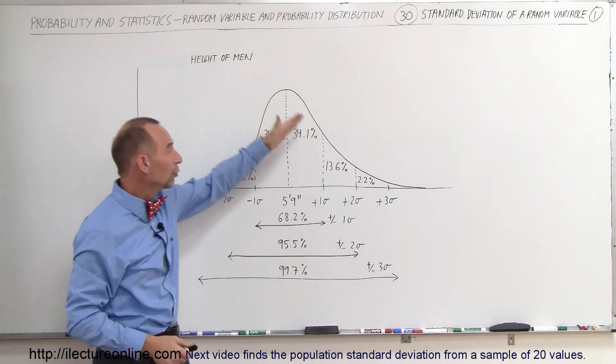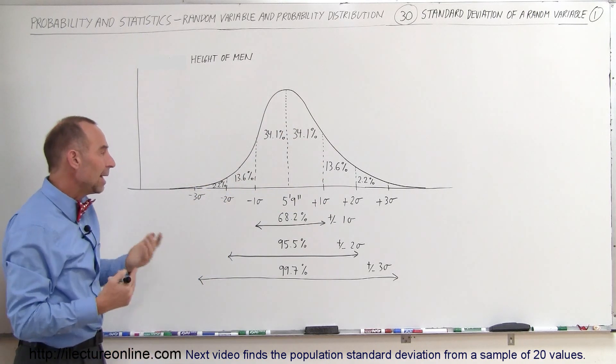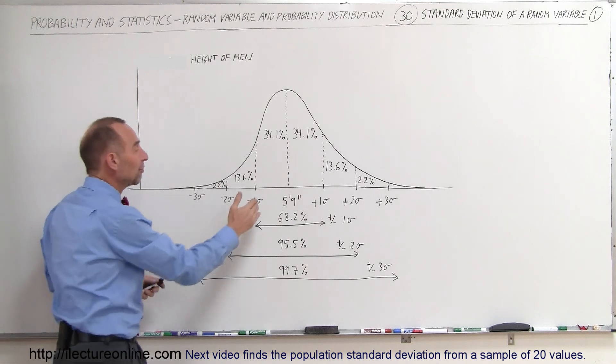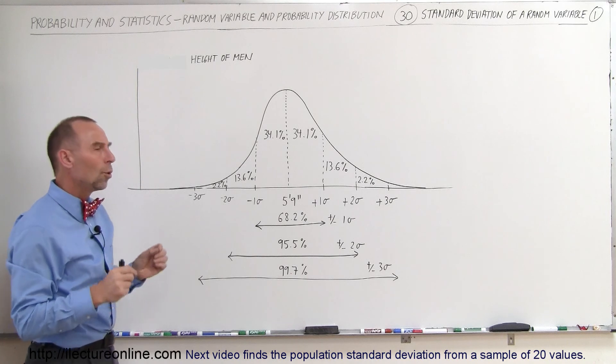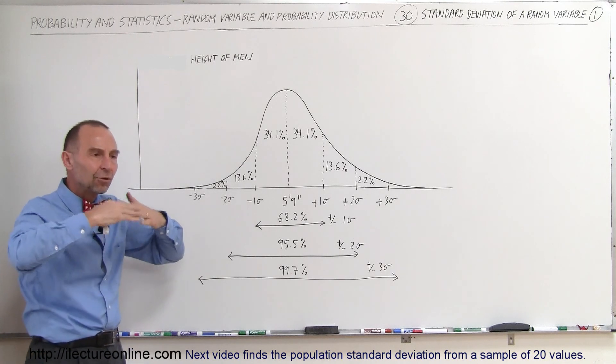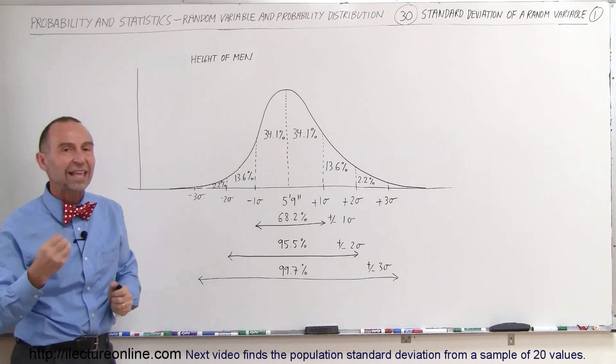For example, in this case, this curve here is supposed to represent the average height of men. And let's say that the average height of men is 5 foot 9 inches tall. Some are taller and some are shorter. So how do we measure that variation in the height of men? Well, we can do it with what we call the standard deviation.